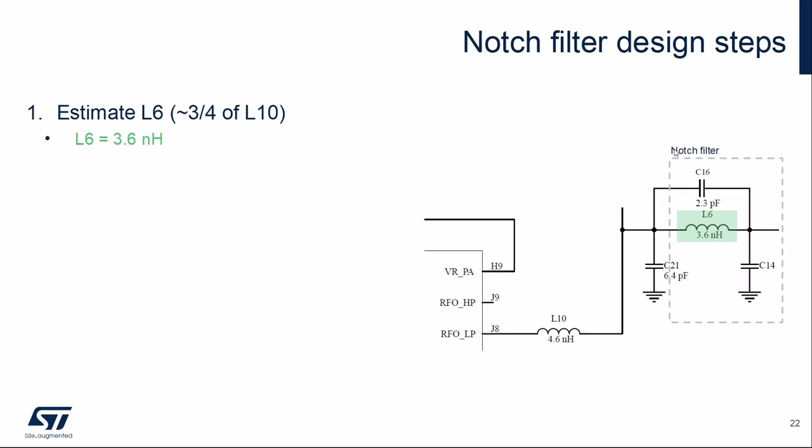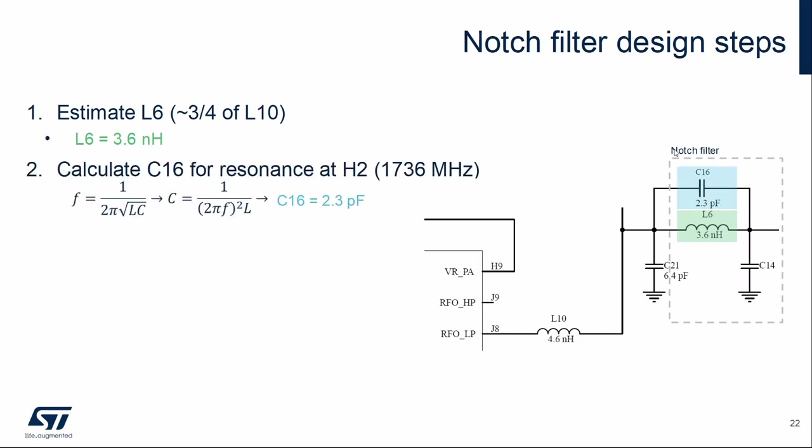As a rule of thumb, the inductor L6 is about three quarters of L10. In this case, 3.6 nH. The resonant frequency of the LC circuit must be at the second harmonic. From this, we can calculate the value of the capacitor C16. It is about 2.3 pF.